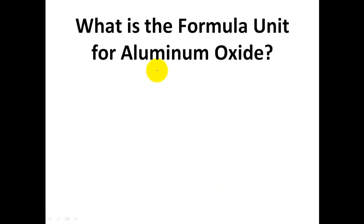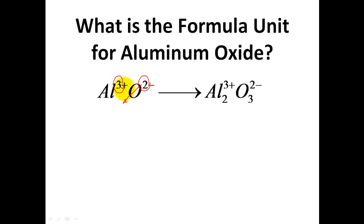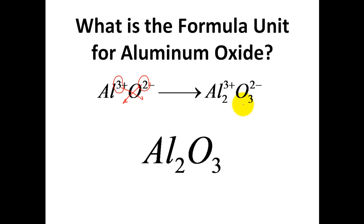I recommend you attempt the next practice problems first, then check your answer. Press pause and attempt aluminum oxide — give me the formula unit by crossing charges. Aluminum has a 3-plus charge and oxygen has a 2-minus charge. When you crisscross them, you end up with Al₂O₃. Note that 3 times 2 gives a 6-plus, and 2 times negative 3 gives negative 6 — the ions always cancel each other out in total charge.